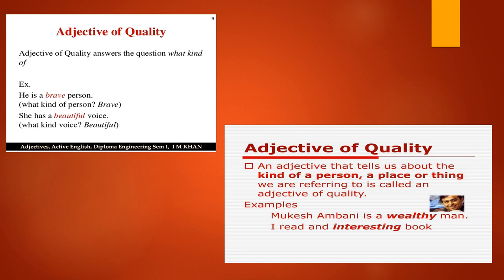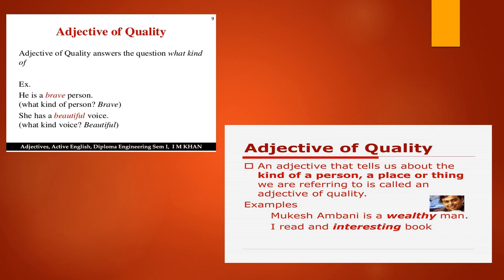In this slide we will learn about adjective of quality. Adjective of quality answers the question: what kind of? An adjective that tells us about the kind of a person, place or thing we are referring to is called an adjective of quality. For example: Ashok is a kind boy. The foolish crow tried to sing. The clever fox walked away with the cheese. In these sentences, the word 'kind' tells what kind of boy Ashok is, 'foolish' tells what kind of crow it was, and 'clever' tells what kind of fox it was.